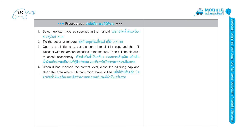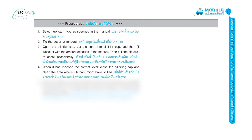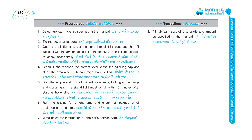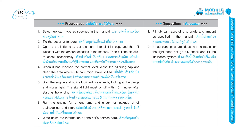4. When it has reached the correct level, close the oil filling cap and clean the area where lubricant might have spilled. 5. Start the engine and notice lubricant pressure by looking at the gauge and signal light. The signal light must go off within 5 minutes after starting the engine. 6. Run the engine for a long time and check for leakage at oil drainage nut and filter. 7. Write down the information on the car's service card. Suggestions: 1. Fill lubricant according to grade and amount as specified in the manual. 2. If lubricant pressure does not increase or the light does not go off, check and fix the lubrication system. 3. The information should specify the brand and the grade of lubricator.